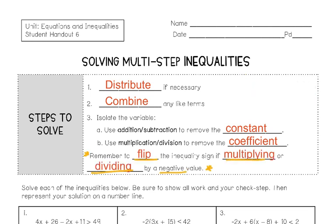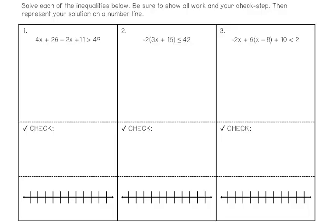The only other thing to remember is that if we multiply or divide by a negative value when solving inequalities, we have to flip the direction of the inequality sign — that's one thing you cannot forget. I'm going to work out each of these three examples and then give you a problem that looks just like each one.